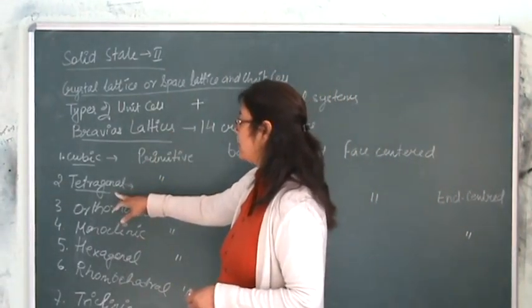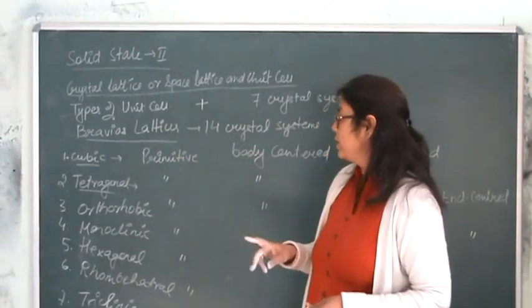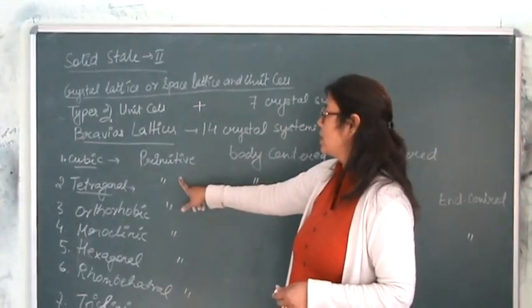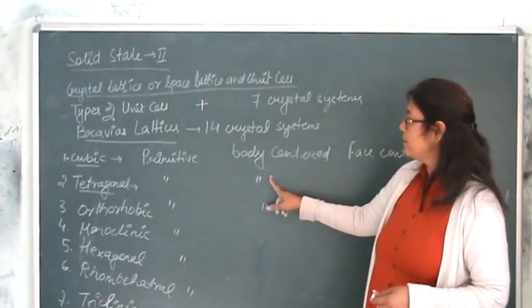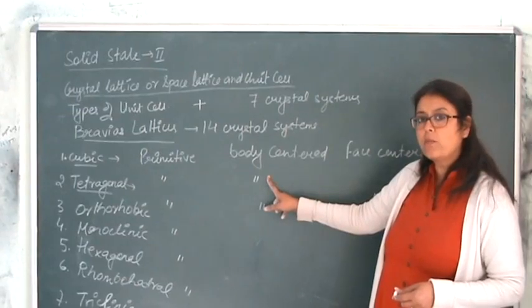When we go on to the next one, tetragonal, tetragonal only shows 2 kinds of arrangements: one is primitive and the other one that is body centered.